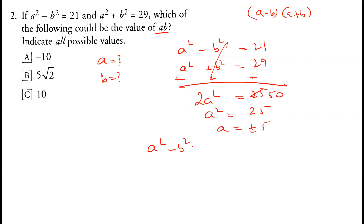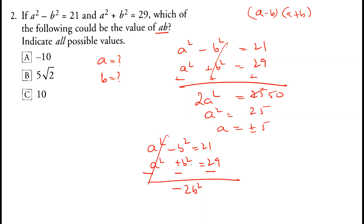Now to eliminate a squared, we subtract the two equations. a squared cancels out and we get minus 2b squared equals 21 minus 29, which is minus 8. So b squared equals 4, and b equals plus or minus 2.